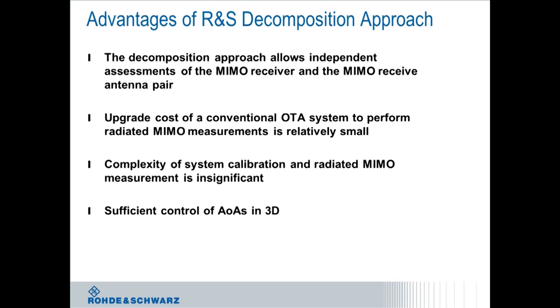From an advantage perspective, the key advantage is that this approach allows you to look at the receiver performance and the antenna performance independently. You get two figures of merit and you combine those in order to get your overall device figure of merit. And for people that already have a SISO system, when upgrading to LTE MIMO, the upgrade cost is very small, because all you do is add a second test antenna.